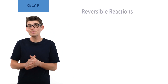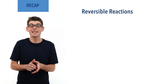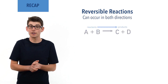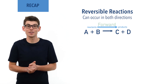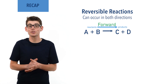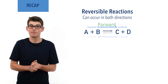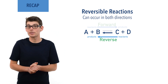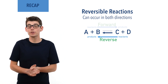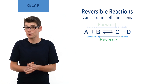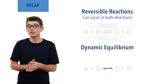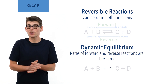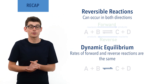A reversible reaction is one in which the reaction can proceed in both directions. Reactants can react to form products in what is called the forward reaction, and these products can also react to form the reactants in what is called the backwards or reverse reaction. In a closed system, reversible reactions reach dynamic equilibrium when the rates of the forward and reverse reactions are the same, meaning concentrations of all reactants and products remain constant.